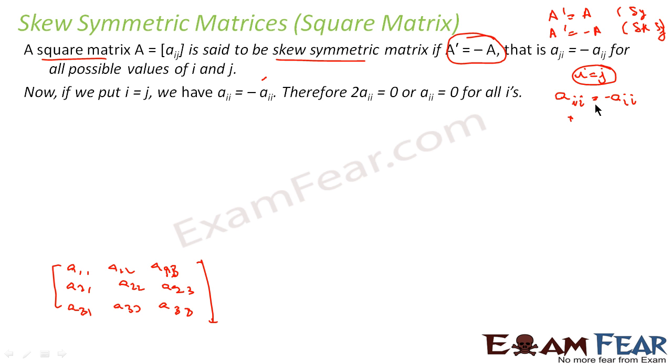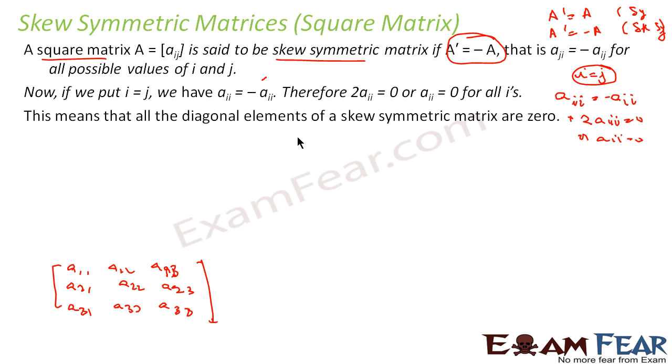That means a_ii equals minus a_ii, or I can say 2a_ii equals 0, or a_ii equals 0. That means all diagonal elements of a skew symmetric matrix are 0.